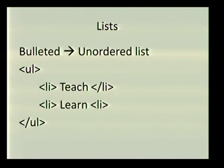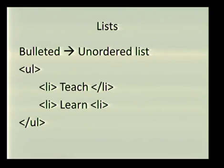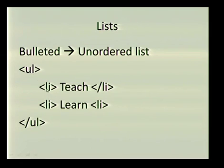Now we're moving on to lists — and don't worry if you're a bit confused, in a few minutes we'll look at some HTML code and you'll see how it all fits together. In HTML there are two kinds of lists: you've got your unordered list and your ordered list. The unordered list is your bulleted list. The tag is UL for unordered, and it has a closing tag forward-slash UL. Within these tags you add your list items using the LI tag. For instance, one bullet might have the word 'teach' and the next bullet 'learn'.